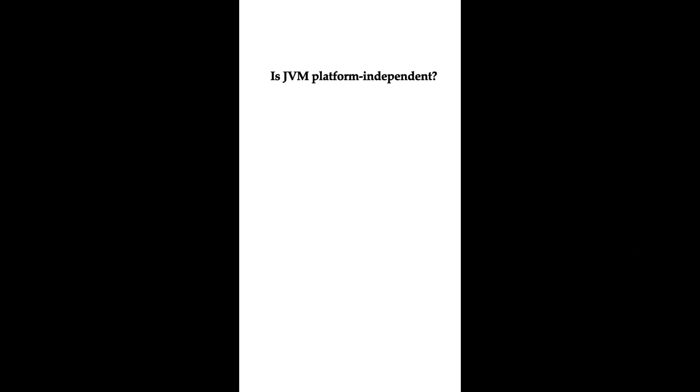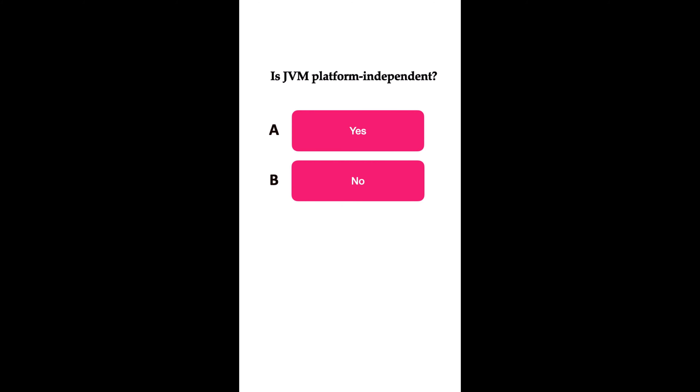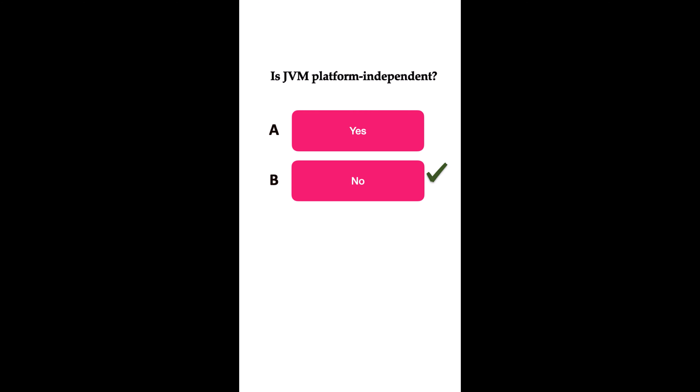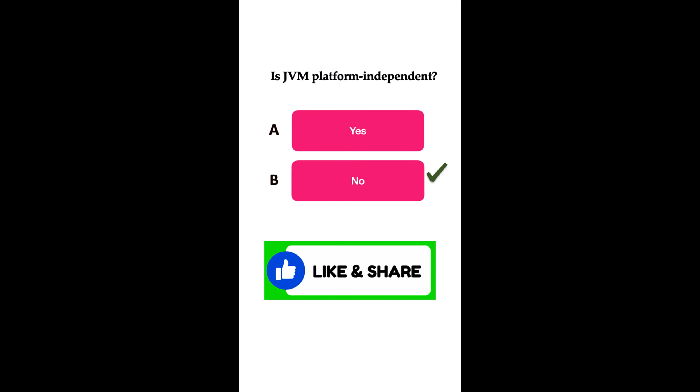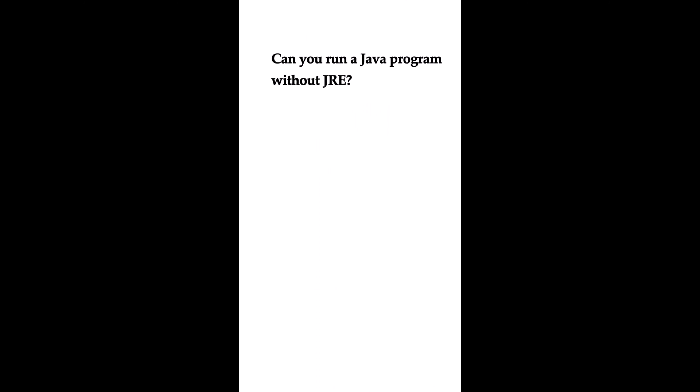Welcome to Java quiz series. Is JVM platform independent? Option A: yes. Option B: no. The answer is no. JVM is platform dependent. Each operating system like Windows and Linux has its own specific version of JVM. When you convert Java code into bytecode, that bytecode is platform independent, but JVM itself is platform dependent. Each OS has its own JVM that runs the bytecode on that particular platform.